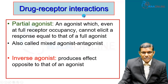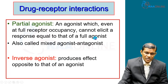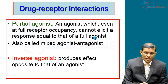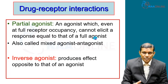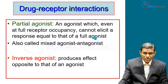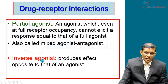A partial agonist is one which, even at full receptor occupancy, cannot elicit a response equal to that of a full agonist. A full agonist binds to the receptors completely and produces a maximal therapeutic effect, but a partial agonist can only produce a sub-maximal effect. It can also be called a mixed agonist-antagonist.